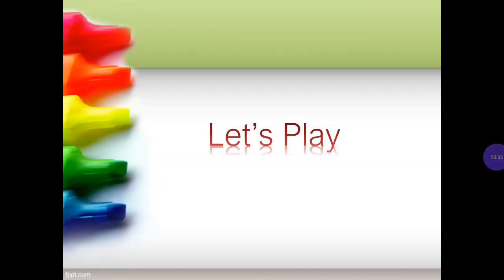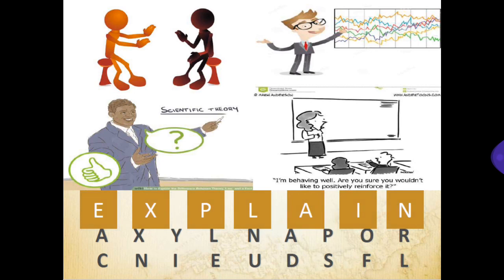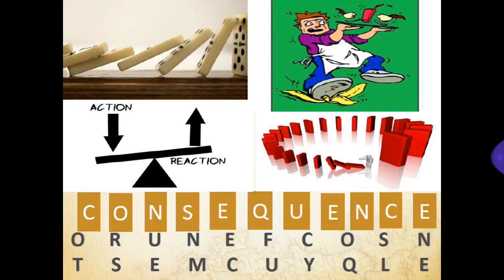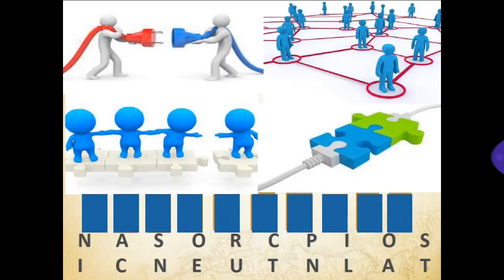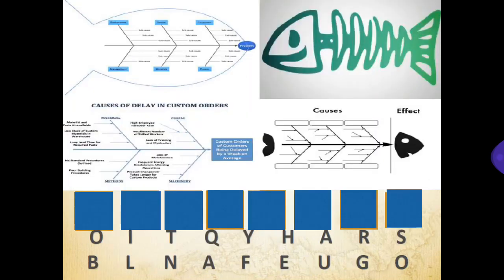Before we start the lesson, let us play. So what is the word being represented by these four pictures? The word is 'explained.' How about this one? The word is 'consequence.' And this one — the word is 'critical.' The last one, that's 'connection.' And another one — 'reason,' 'fishbone.'